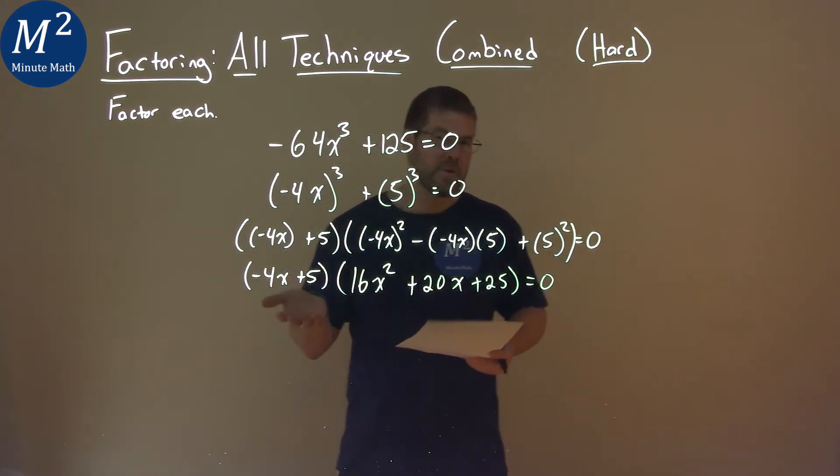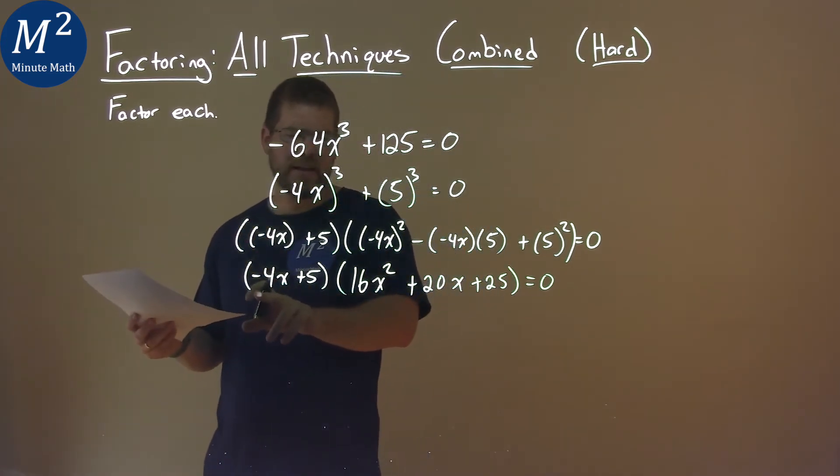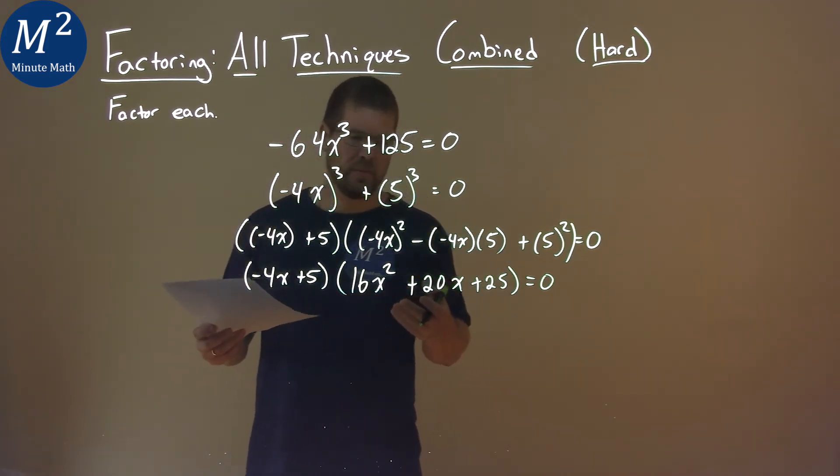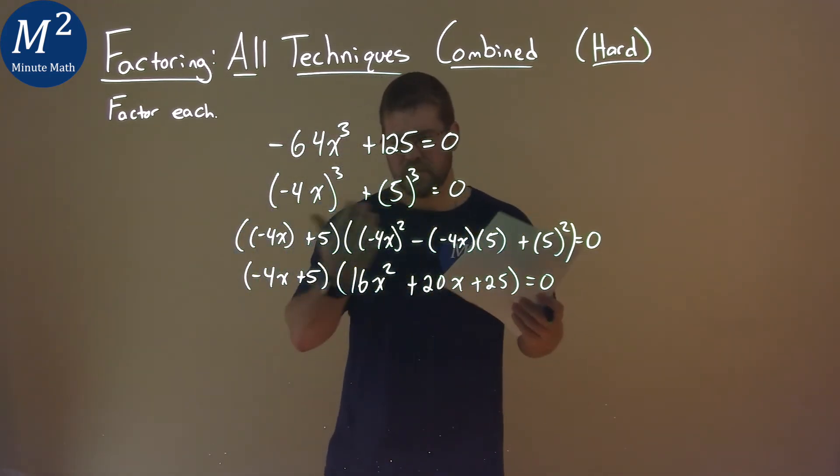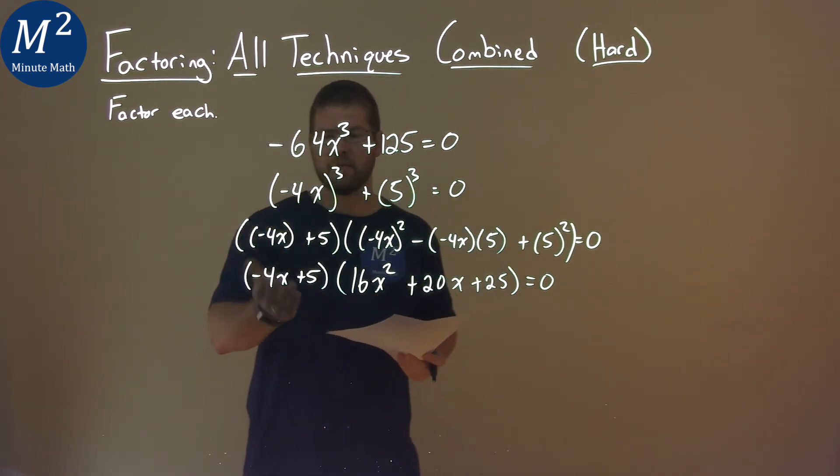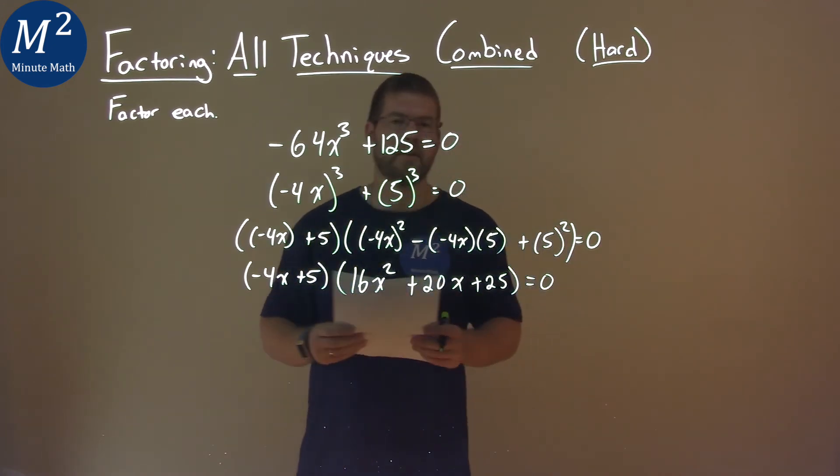And that's equal to 0. At this point, I can't really factor it anymore. I'm pretty much done. You could maybe move the negative, pull the negative out, put it into this part. It really doesn't help you. Like I said, we're not going to solve this. We just wanted to factor it. So our final answer here, factored, is negative 4x plus 5 times 16x squared plus 20x plus 25 equals 0.